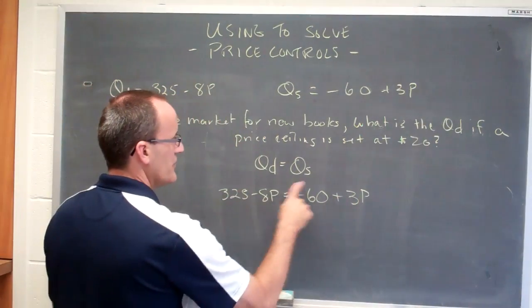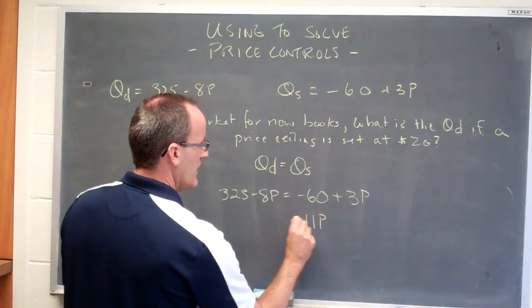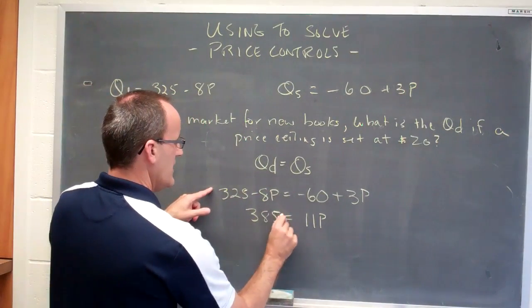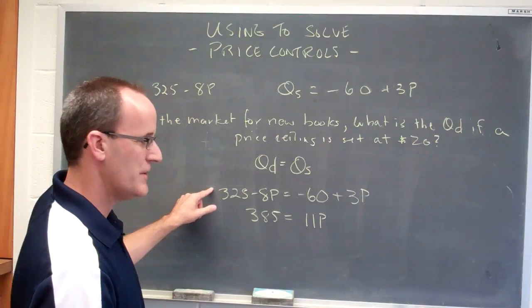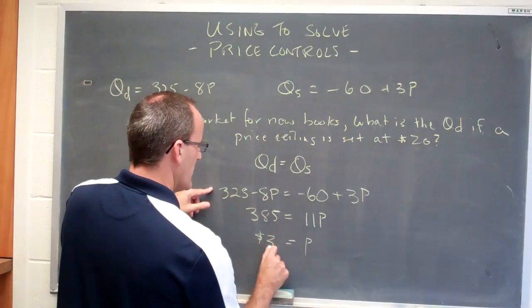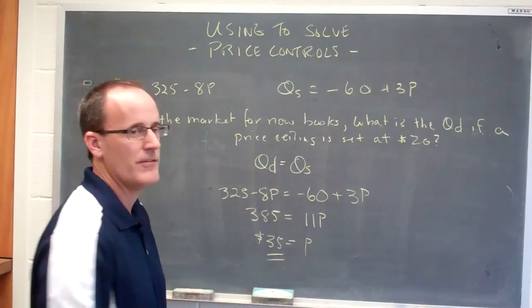We'll collect terms. I'll move this over. We get 11p, and we'll move that over. We'll get 385, and in this particular case, doing a little bit of division here, the market clearing price is $35.